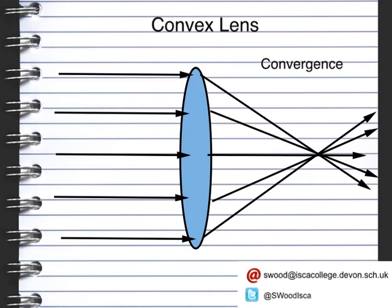This convergence happens at the focal point. The length from the lens to the focal point — so from here to here — is known as the focal length.